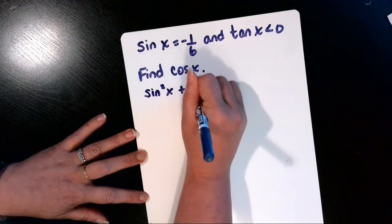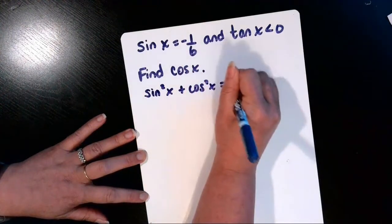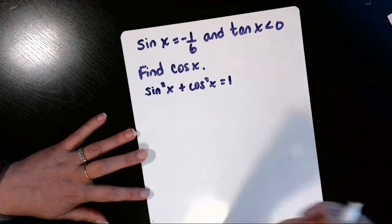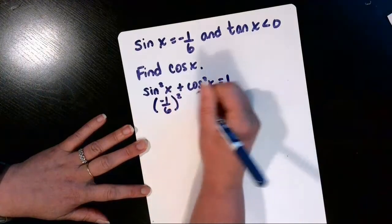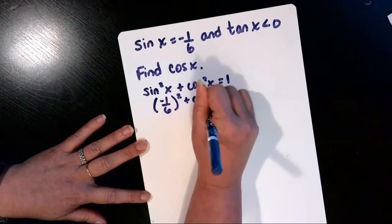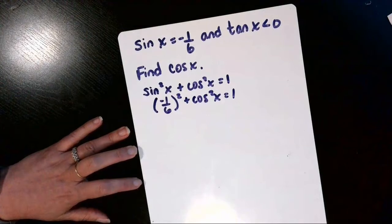Sine squared x plus cosine squared x is equal to 1. And substitute in negative one-sixth for the sine, and then we're going to solve for cosine.